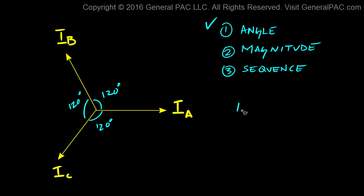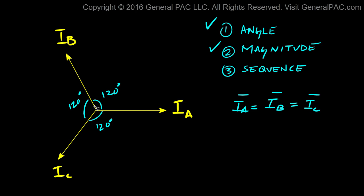Rule number two has to do with equal magnitude between all three phasors. So if the magnitude of IA is equal to the magnitude of IB, which is equal to the magnitude of IC, then we have completed rule number two. The distance from the origin to the tip of IA equals that of IC and IB — meaning the length of phasor A equals phasor B equals phasor C. If that is true, then we have completed rule number two.